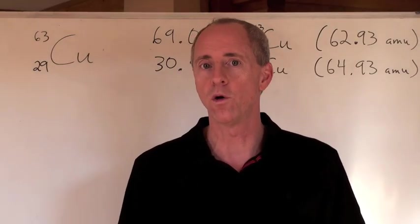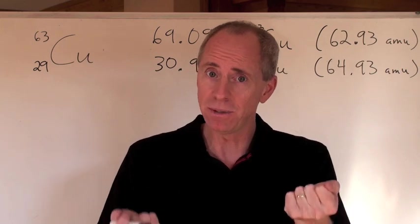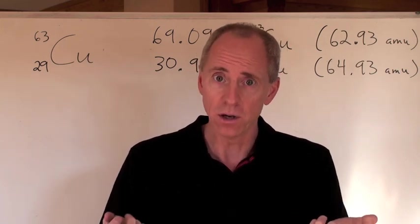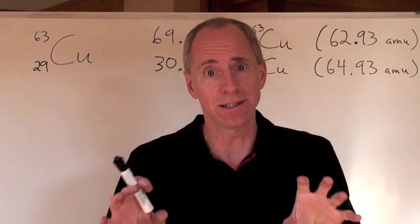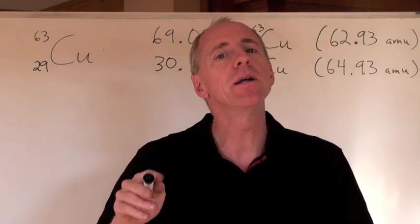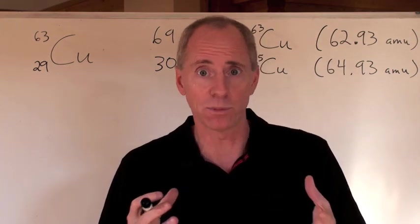So we were talking about isotopes before. Atoms in the same element can actually be a little bit different from one another. How? Well, they've got to have the same number of protons and the same number of electrons in the atom, but they can have different numbers of neutrons.